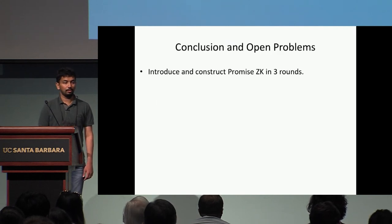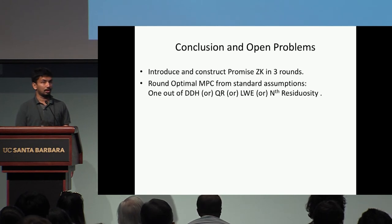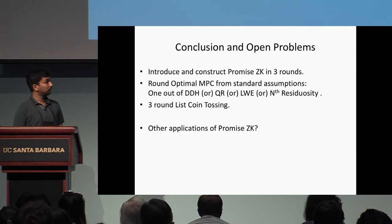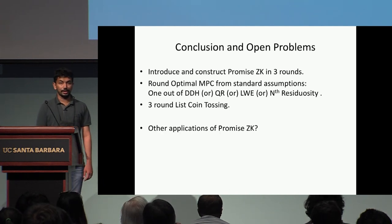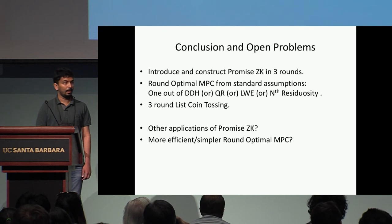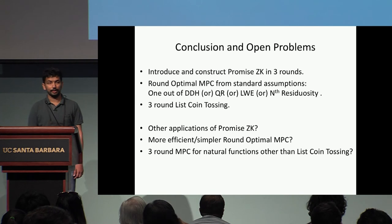To conclude, we introduce Promise Zero Knowledge and show how to build it in three rounds. We use Promise ZK to construct round-optimal MPC from standard assumptions, completing this line of research. We also introduce list coin tossing and build it in three rounds. Open problems include: finding other applications of Promise ZK, building more efficient or simpler round-optimal MPC protocols, and building three-round MPC for other natural functions beyond list coin tossing. Thank you.